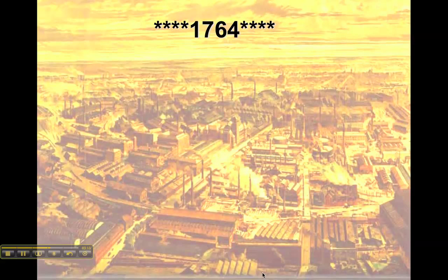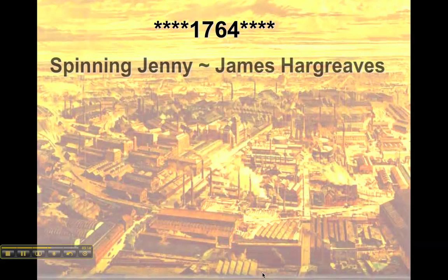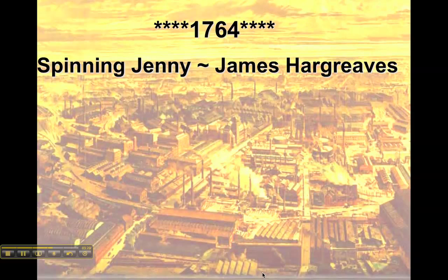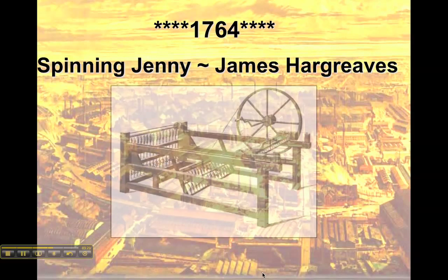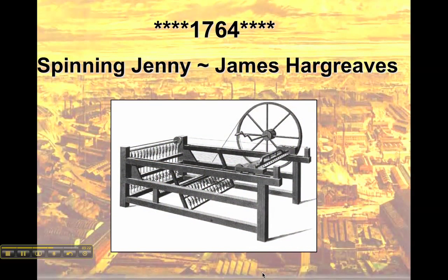The first invention of the Industrial Revolution was the spinning jenny in 1764. It was a spinning wheel with eight spindles instead of just one, and could produce eight spools of thread with the same effort it took to produce one spool. Eventually more spindles were added, as you can see in this model in the picture.